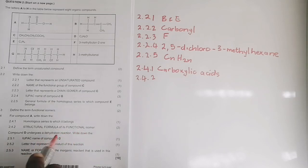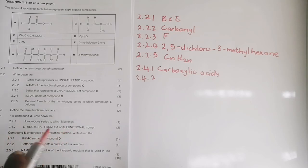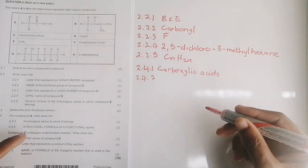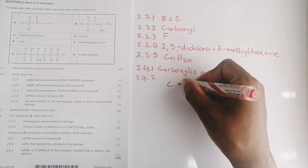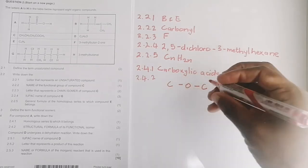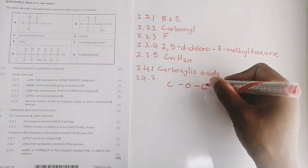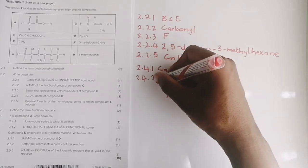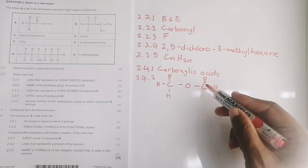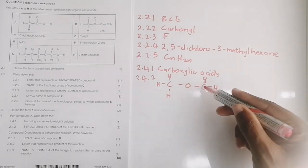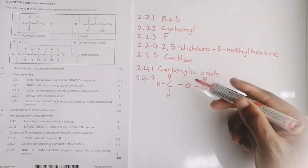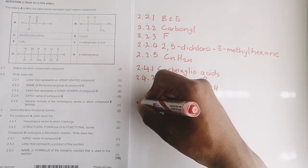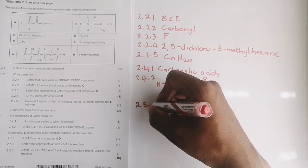Question 2.4.2 says: write down the structural formula of its functional isomer. Carboxylic acids and esters are functional isomers of each other. So we need an ester with the same molecular formula as compound A — it must have two carbons. An ester has a C double bond O with an O single bond. The structural formula of that ester would have two carbons, two oxygens, and four hydrogens — exactly the same molecular formula as the carboxylic acid.